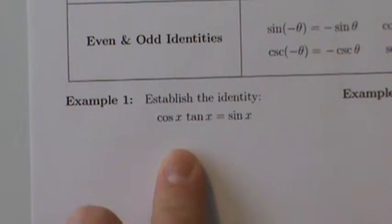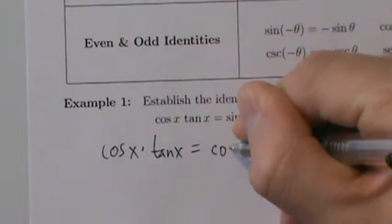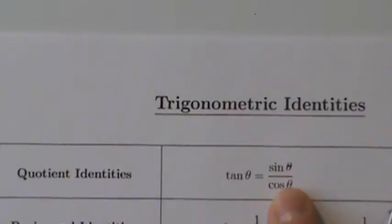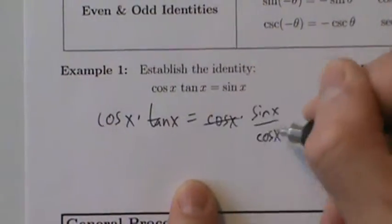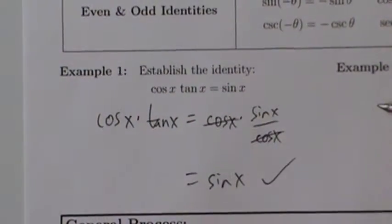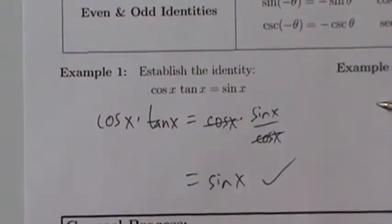Here are two simple examples. In Example 1, the basic idea with trig identities is to take one side, start on either side, and only work on that side to make it look like the other side. Here it's probably a little easier to make the left side look like the right. So, cosine of x times tangent of x: we can replace tangent using the quotient identity — tangent is sine divided by cosine. The cosines cancel and we're left with sine of x. That's what we wanted: cosine of x times tangent of x equals sine of x.